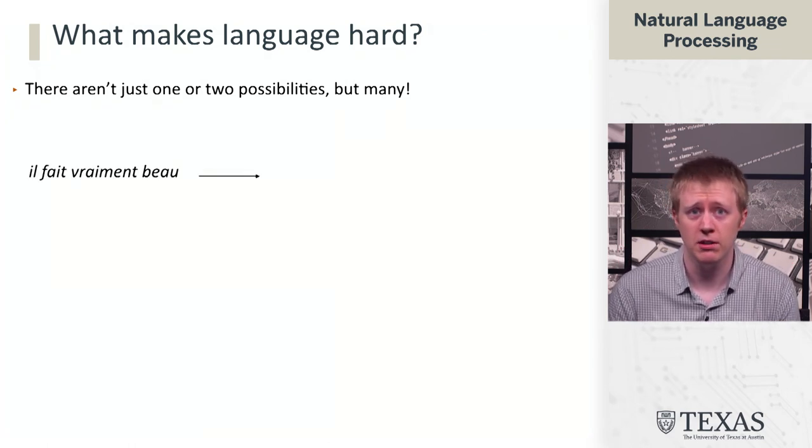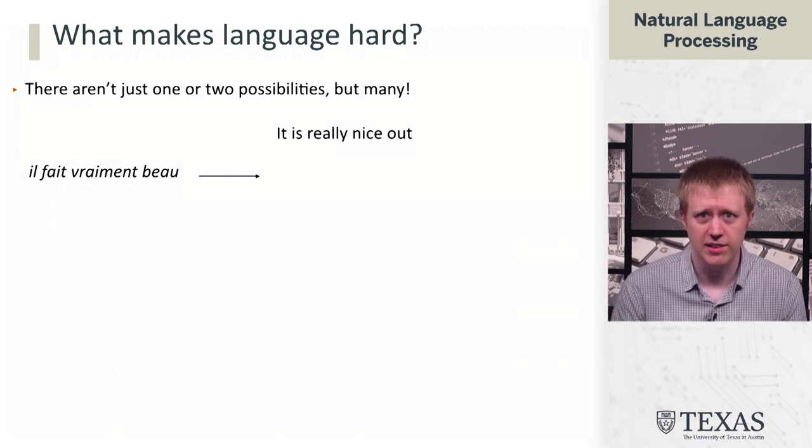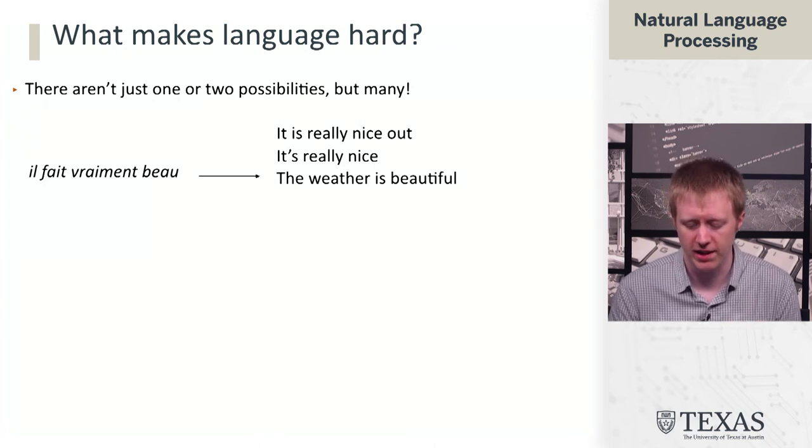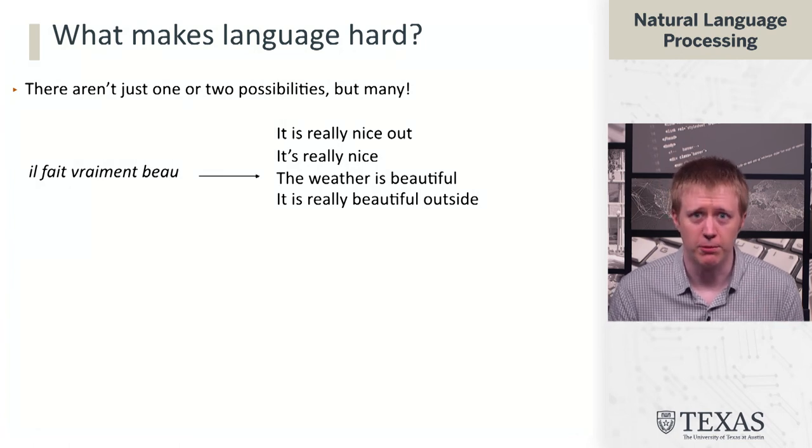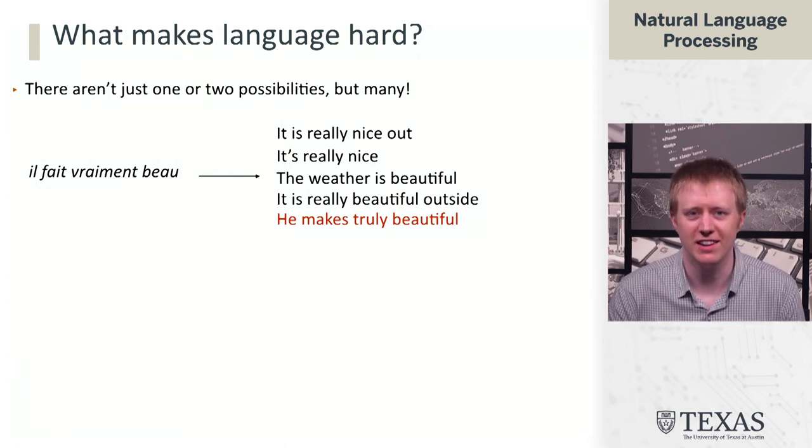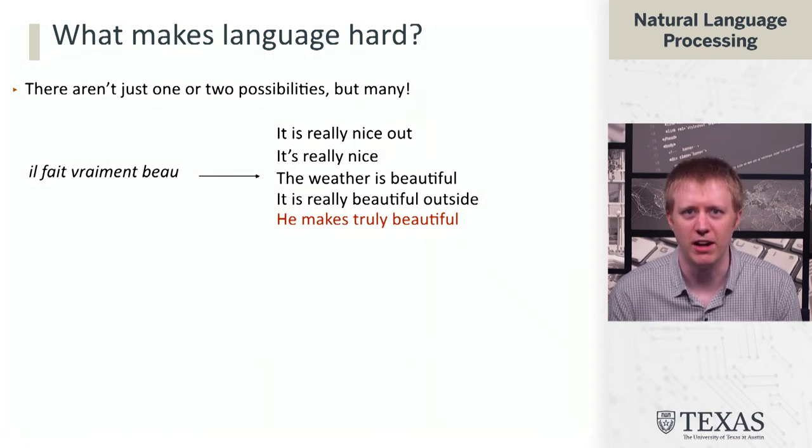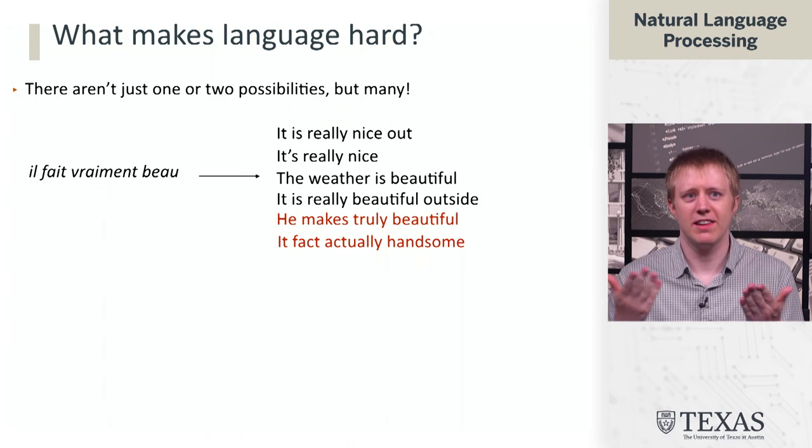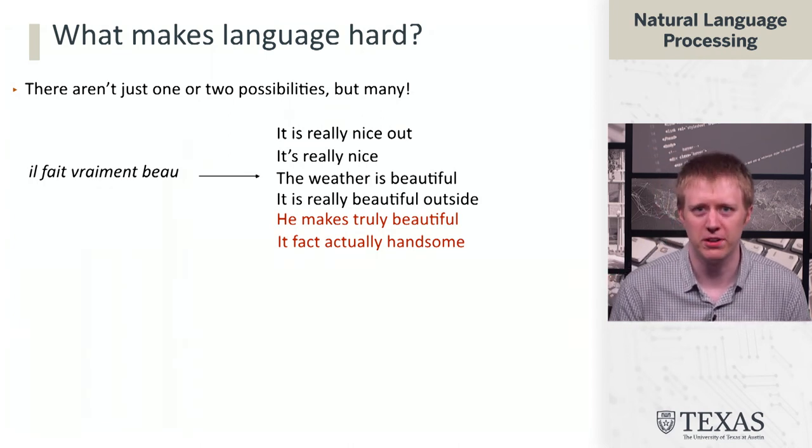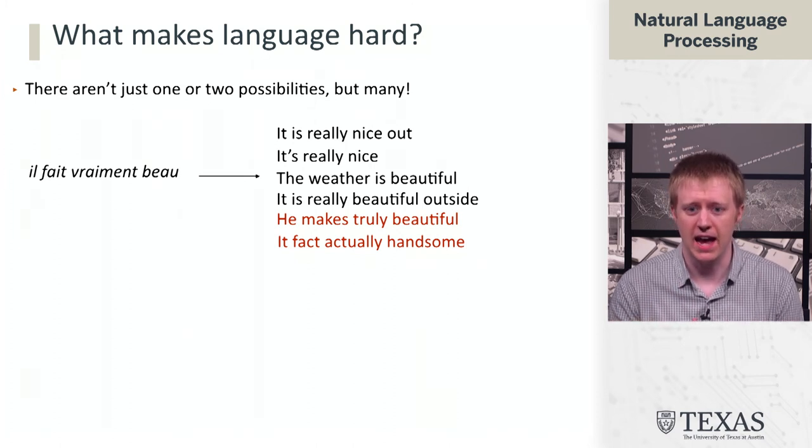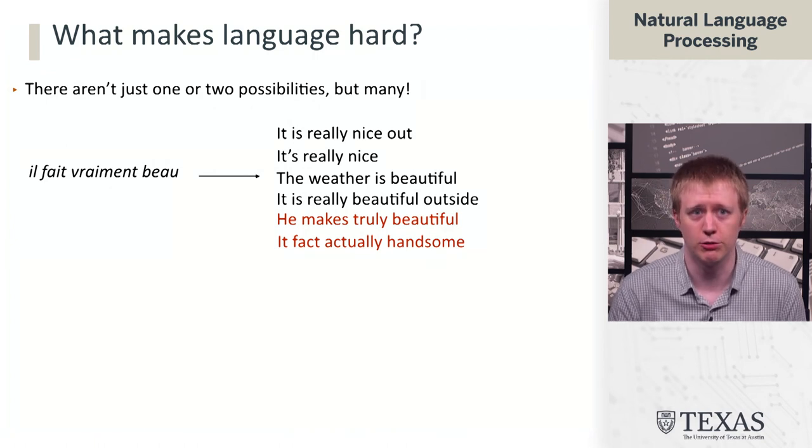We're going to think about a translation example here. 'Il fait vraiment beau,' which roughly means it's really nice out or the weather is beautiful. There's actually lots of different valid translations of this. But if we think about even for this four word sentence, what could happen, 'it is really beautiful outside' is another possibility. If you go word by word and translate this, 'he makes truly beautiful,' this is actually valid translations of each of those four words. Of course, it absolutely does not make sense and is not what the speaker or writer of this intended. Or 'it fact actually handsome,' another case. A lot of times when we look at these examples of ambiguity and we say, oh ha ha, there's two interpretations. No, in fact, there's billions of interpretations. We're going to need structured models that can reason about them and are very statistically powerful so they can pick the right one out of all of these possibilities.